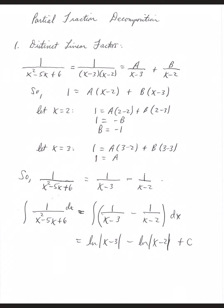Let's start with the type that has distinct linear factors. We'll begin with the fraction 1 over x squared minus 5x plus 6. In all of these different types and examples, we're going to factor the denominator as completely as possible. This quadratic denominator can be broken down into x minus 3 times x minus 2. Negative 3 times negative 2 has a sum of negative 5 and a product of 6. Because these broke down from x squared to just x, they're considered linear, and because they are different, they're distinct linear factors.